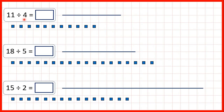Now we have some division questions, but for these questions we're going to get remainders. That's because 11 isn't in the 4 times table, 18 isn't in the 5 times table, and 15 isn't in the 2 times table.